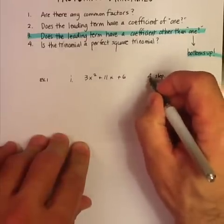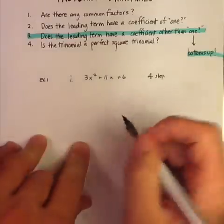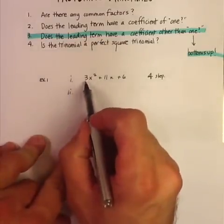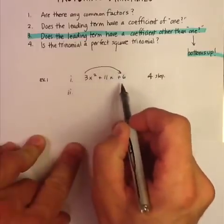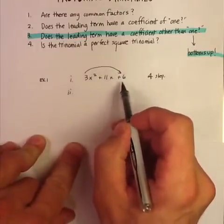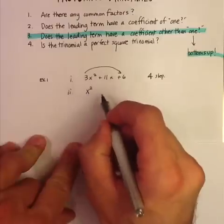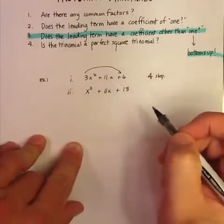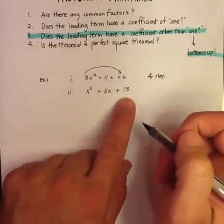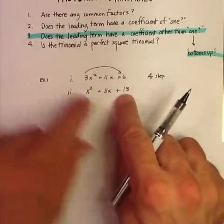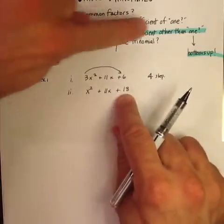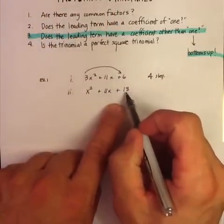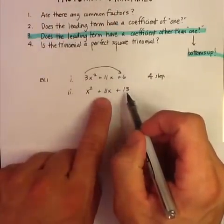You get the right answer every single time, if it's factorable. What you do is take the leading coefficient and multiply the constant. So you end up with x² + 11x + 18. Now you factor this just like you did where the leading coefficient was 1. So you ask yourself: what are the factors of 18 that add up to 11?